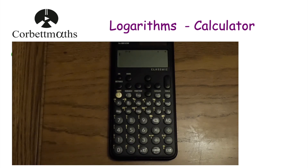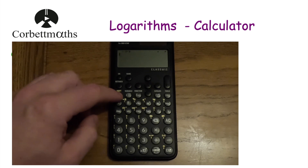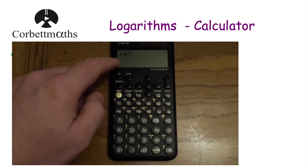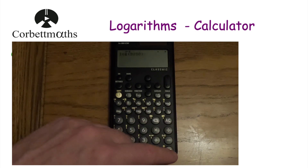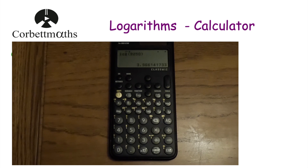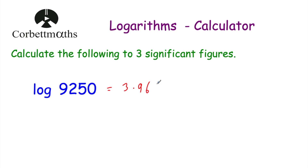We want to do log of 9,250, and obviously the base here is 10. So press shift and then the squared button — it brings up log to base 10. Then type 9,250, close brackets, and press equals. That's equal to 3.966141733. Rounding to three significant figures: 3.9, then we've got 6, 6 — so we round up to 7. The answer to three significant figures is 3.97.